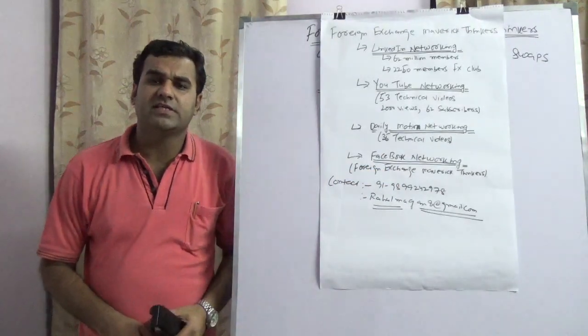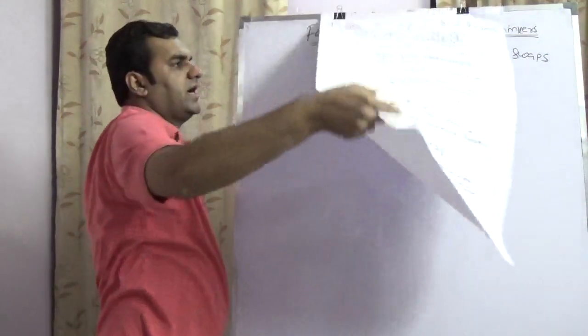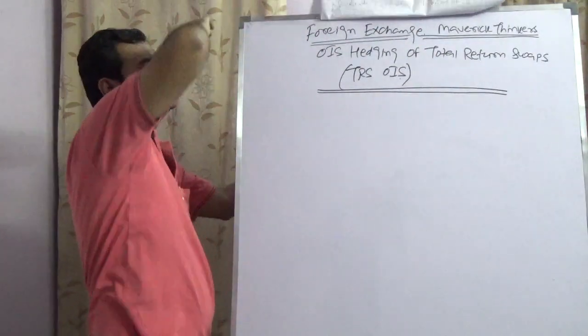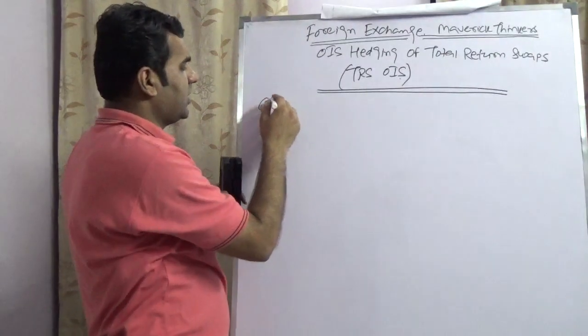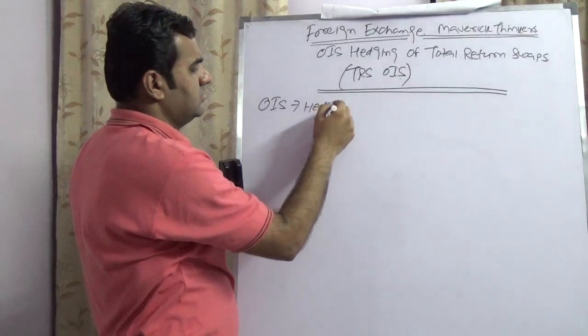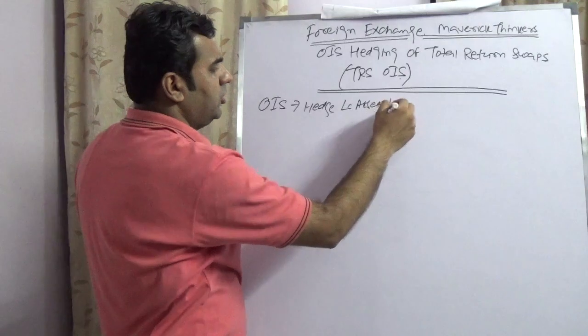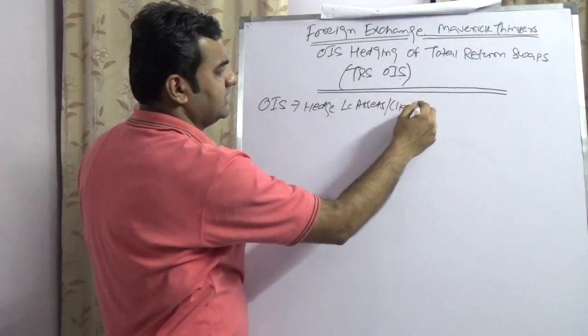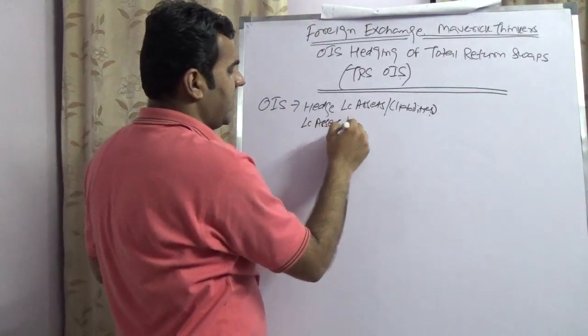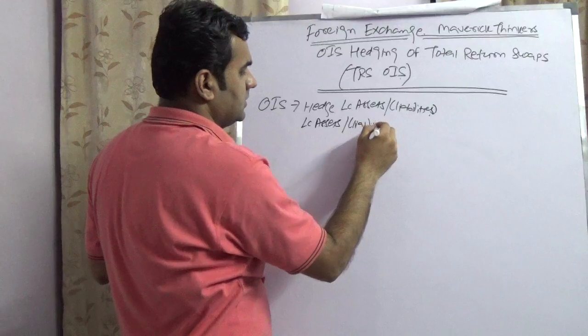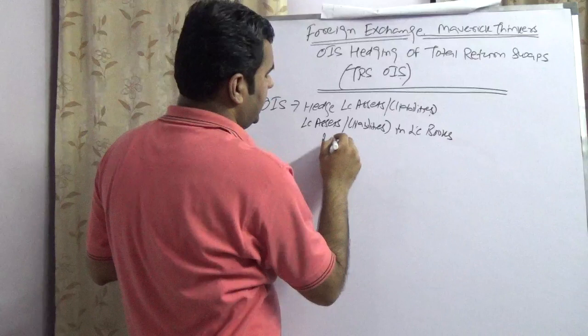Today I'm going to speak about how to take overnight index swap on TRS. Previous to that, I would like to have a small introduction of overnight index swap. Overnight index swap is nothing but a swap which is used to hedge local currency assets or local currency liabilities in local currency books and in local country.